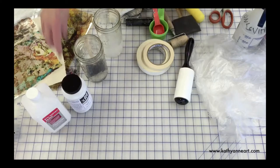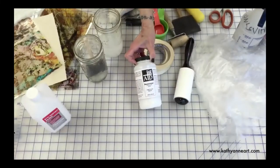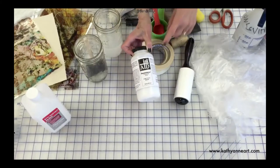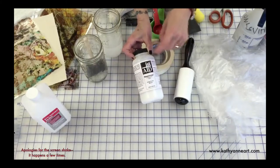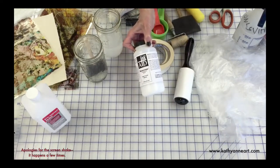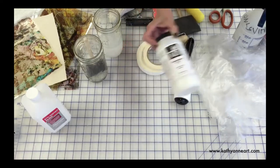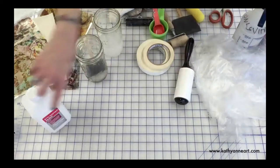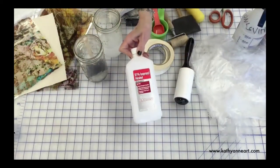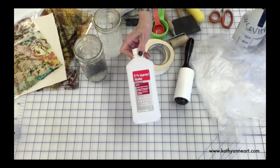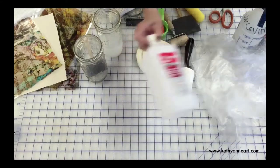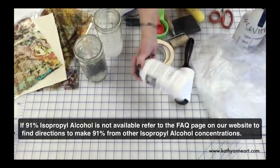First of all, you are going to need some Transferees, which is an image transfer medium by InkAid. This is the one that I use because I think it really works really well. Then we're going to need to take 91% alcohol and mix it with the Transferees.